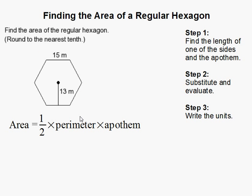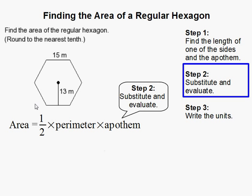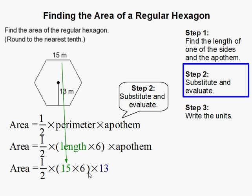Now that I have the length of the sides and the apothem, now what I need to do is substitute into this equation. Here what I did was I substitute the 15 here because remember the perimeter is a length times 6. That's 15 times 6 and it's 6 because there's 6 sides of a hexagon. And then this 13 comes from the apothem.